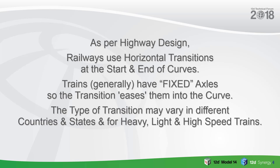As per highway design, we always use horizontal transitions at the start and end of curves. The trains generally have fixed axles, and so these transitions ease them into the curve. The type of transitions may vary in different countries and states, and for heavy, light, or high speed trains.